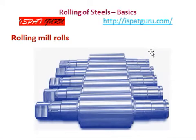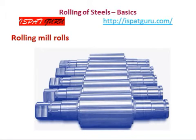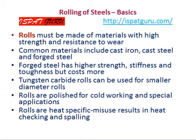The slide shows a set of rolls — there are five rolls as shown, which are the raw rolls. They are to be assembled with bearings and shafts, and in the case of shape rolling they are to be grooved. The rolls must be made of materials with high strength and resistance to wear. The typical materials used for making rolls are cast iron, cast steel, and forged steel. Forged steel has higher strength, good stiffness, and toughness but they cost more. They are used normally for wire rod mills and light section mills finishing stands.